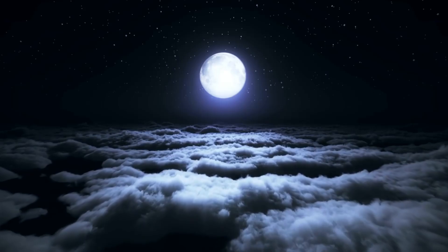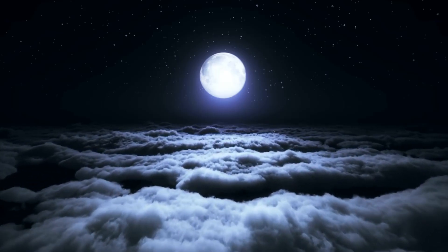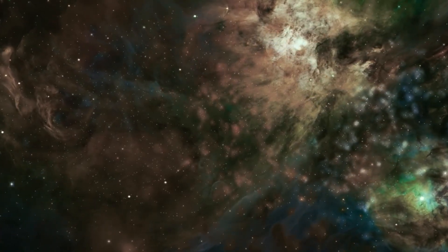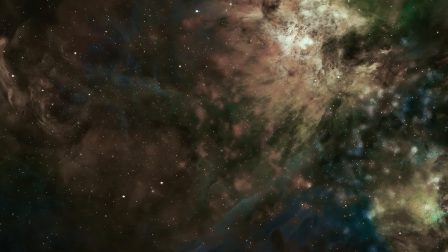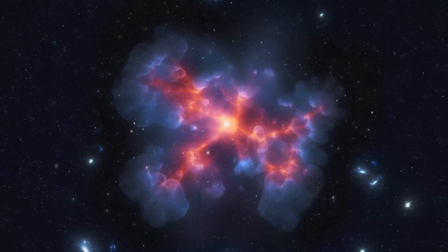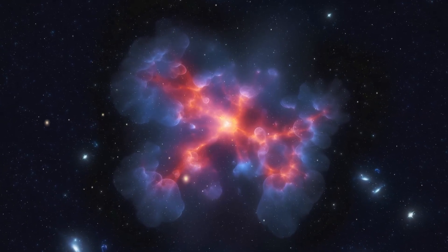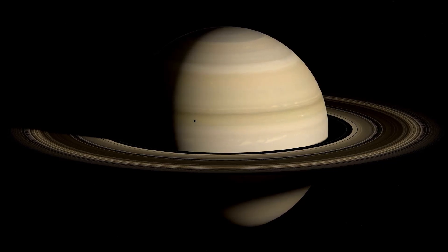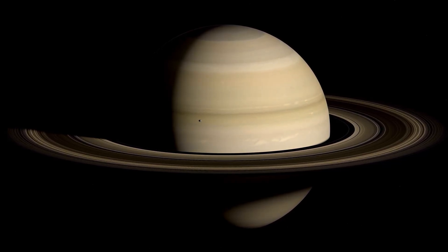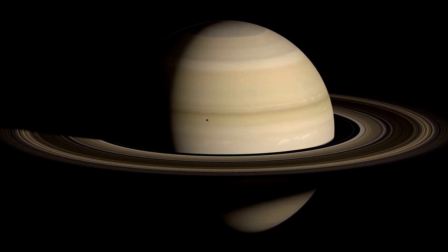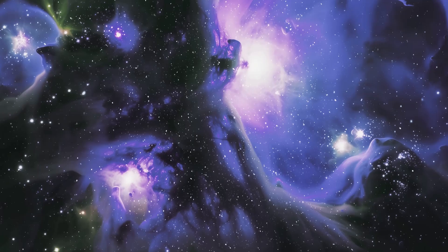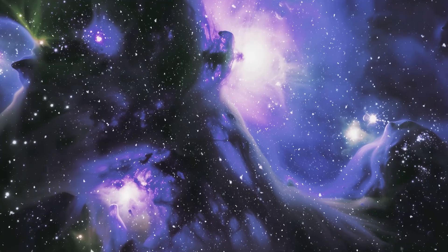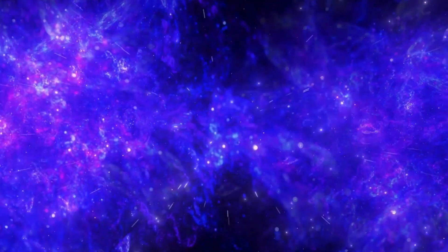Over time, matter cooled and clumped together to form the galaxies, stars, and planets we observe today. The Big Bang Theory is supported by several key observations: Cosmic Microwave Background Radiation, CMBR, this faint glow of radiation is the afterglow of the Big Bang, providing a snapshot of the universe just 380,000 years after its inception. Redshift of Galaxies - the observation that galaxies are moving away from us, with more distant galaxies receding faster, indicates that the universe is expanding. This is consistent with the idea of an expanding universe from an initial singularity.